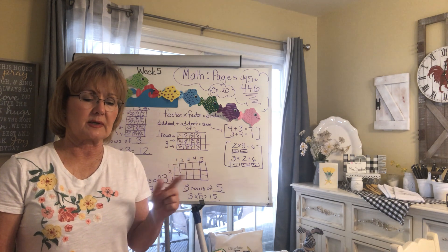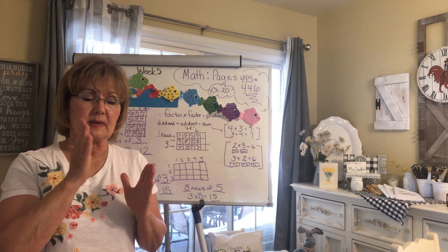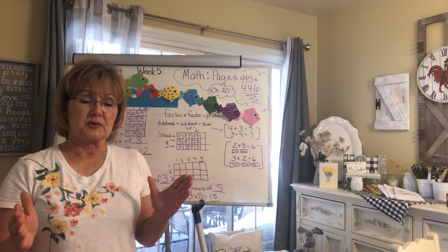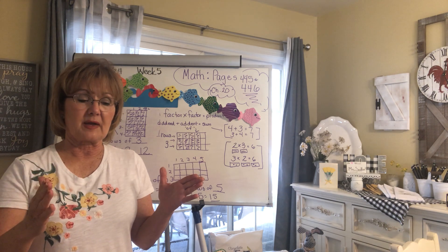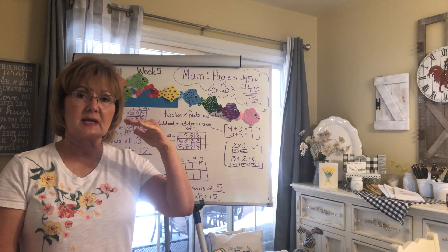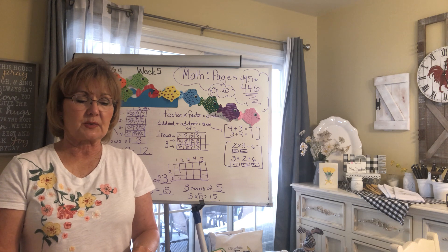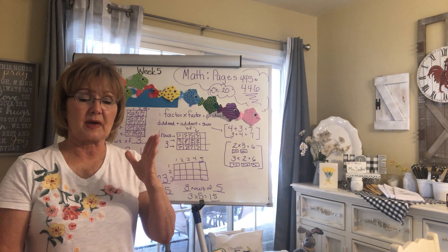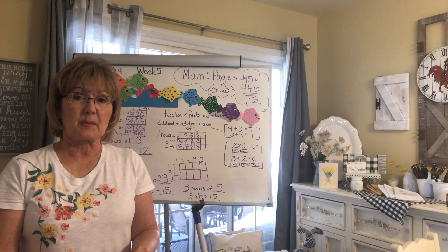Number two: how many rows do you see going across? Four. How many are in each row? Five. So you have four rows of five, which makes four times five equals — count by fives — five, ten, fifteen, twenty.